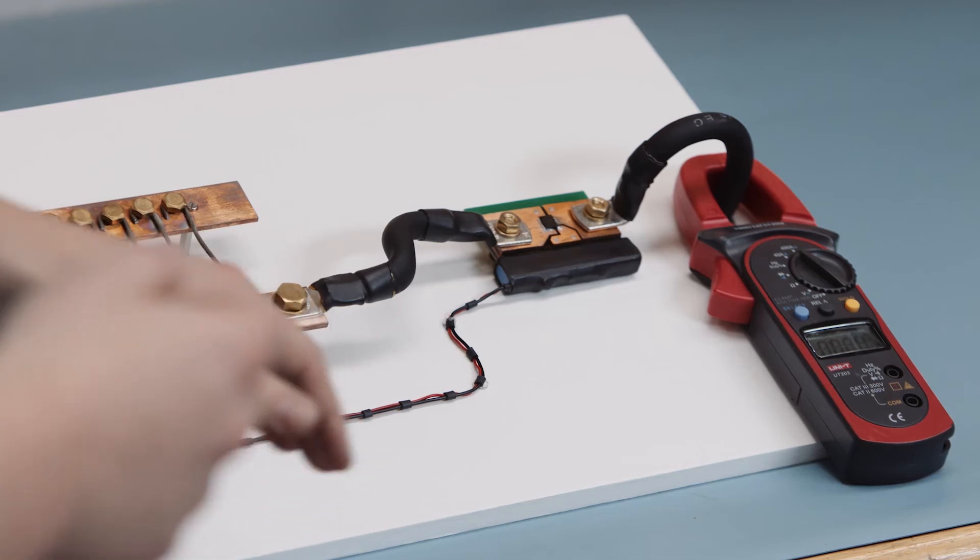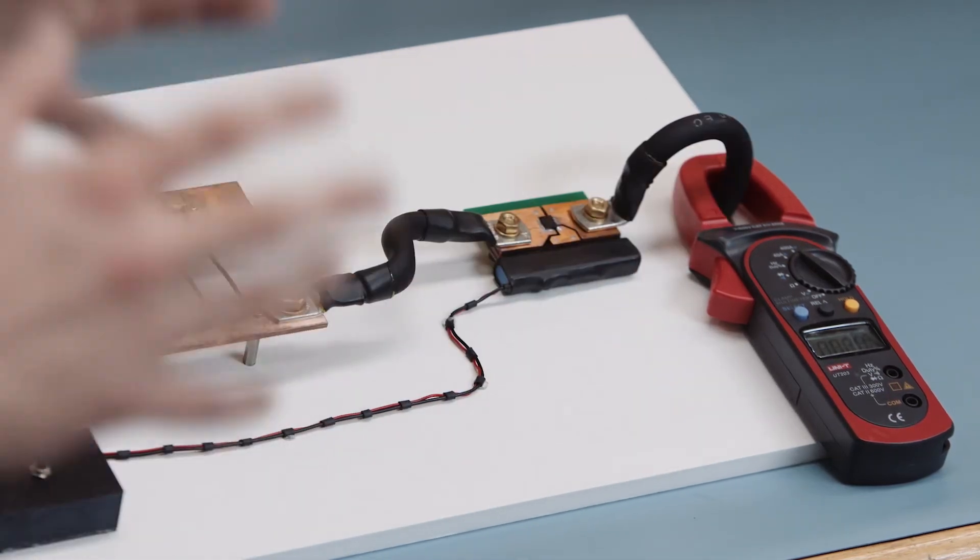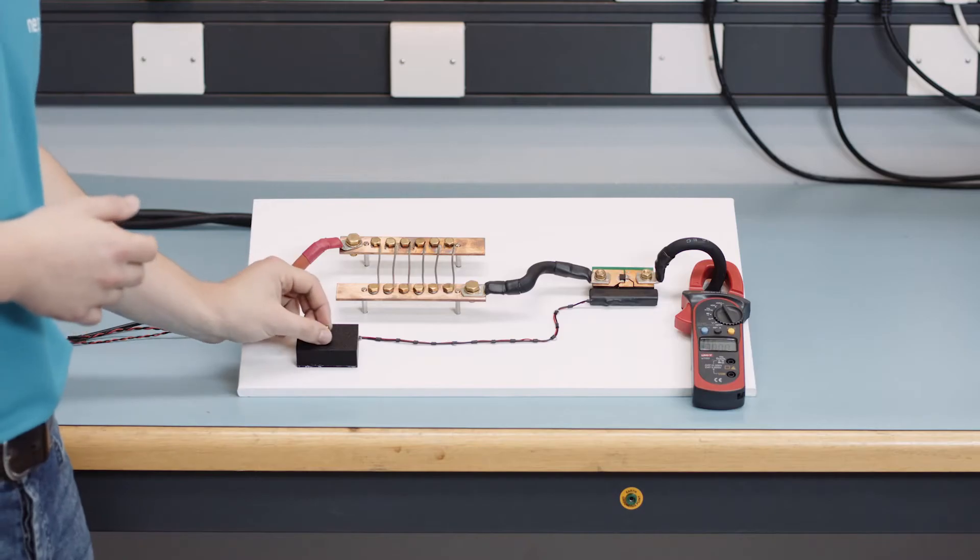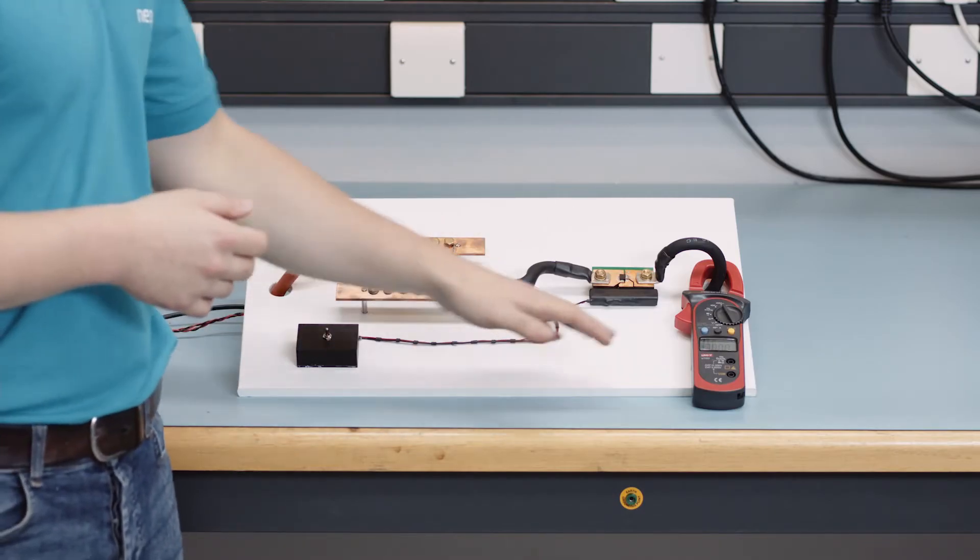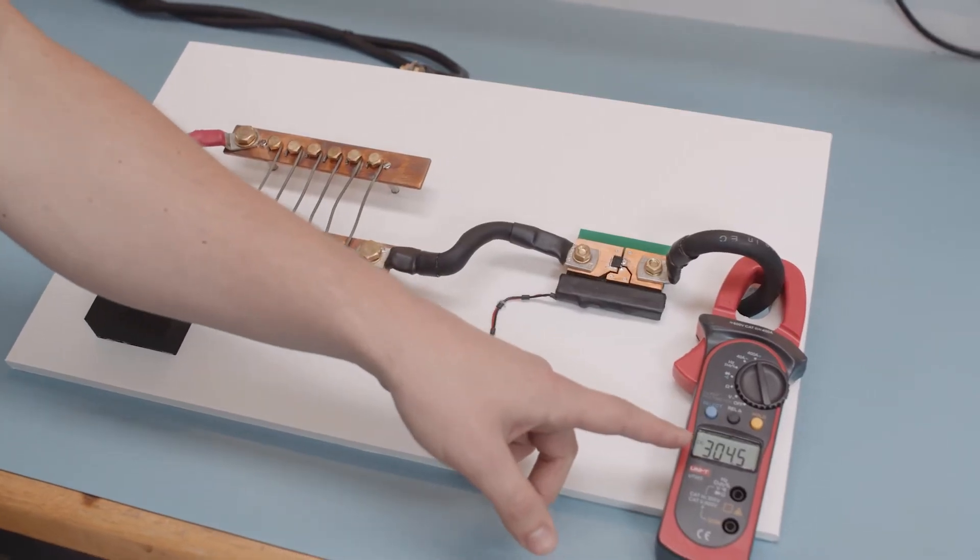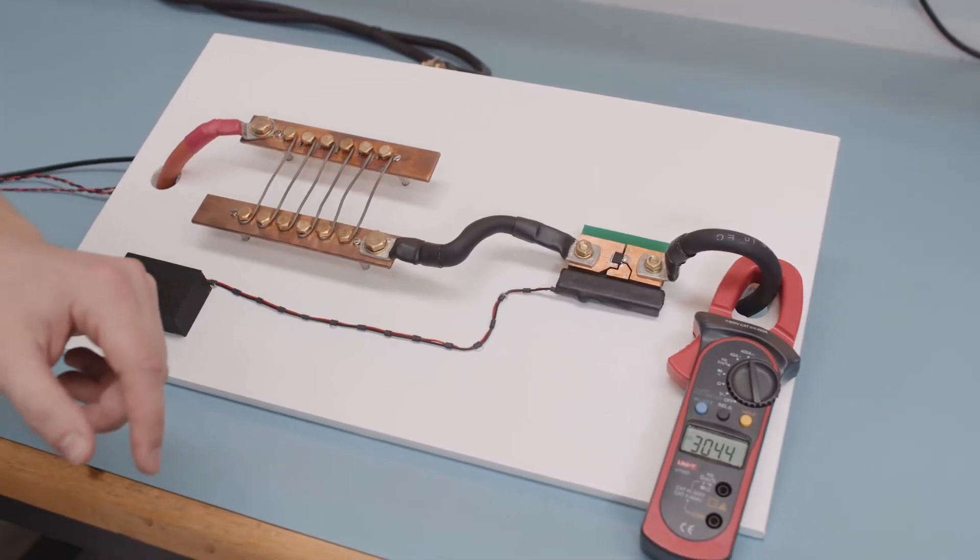We also have a gate source signal here which will be used to drive the MOSFET on and off. When we turn the MOSFET on, you will see 300 amps start flowing, and these wires will start glowing after a certain period of time.